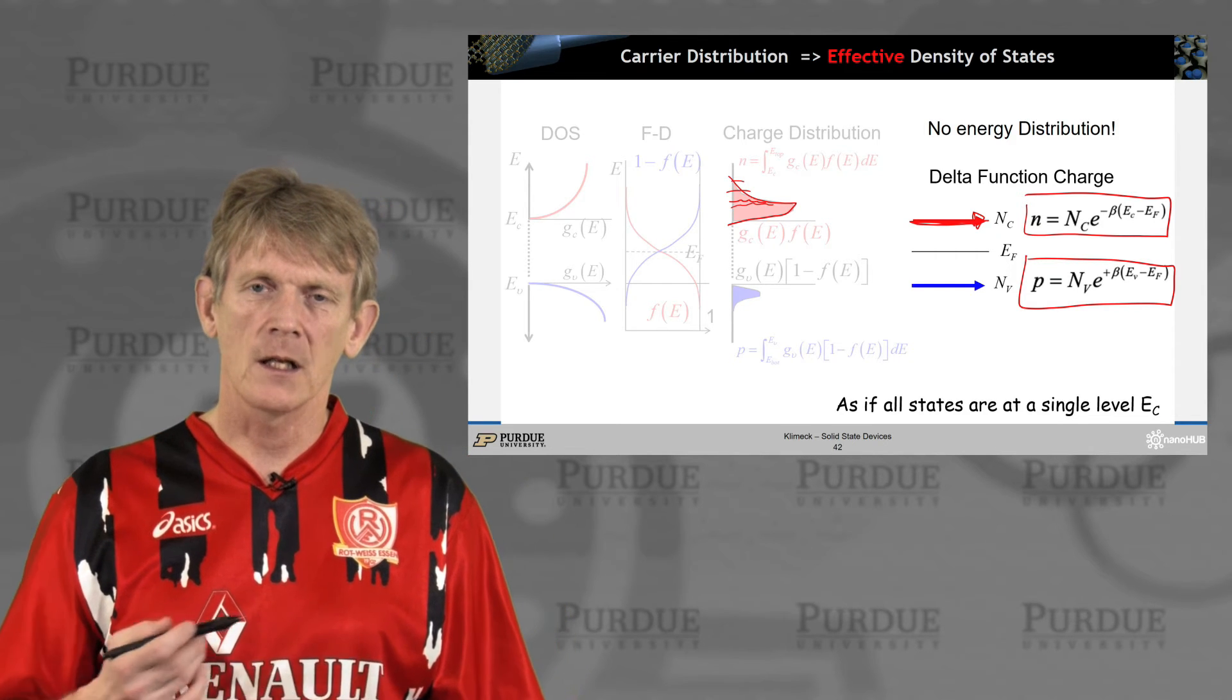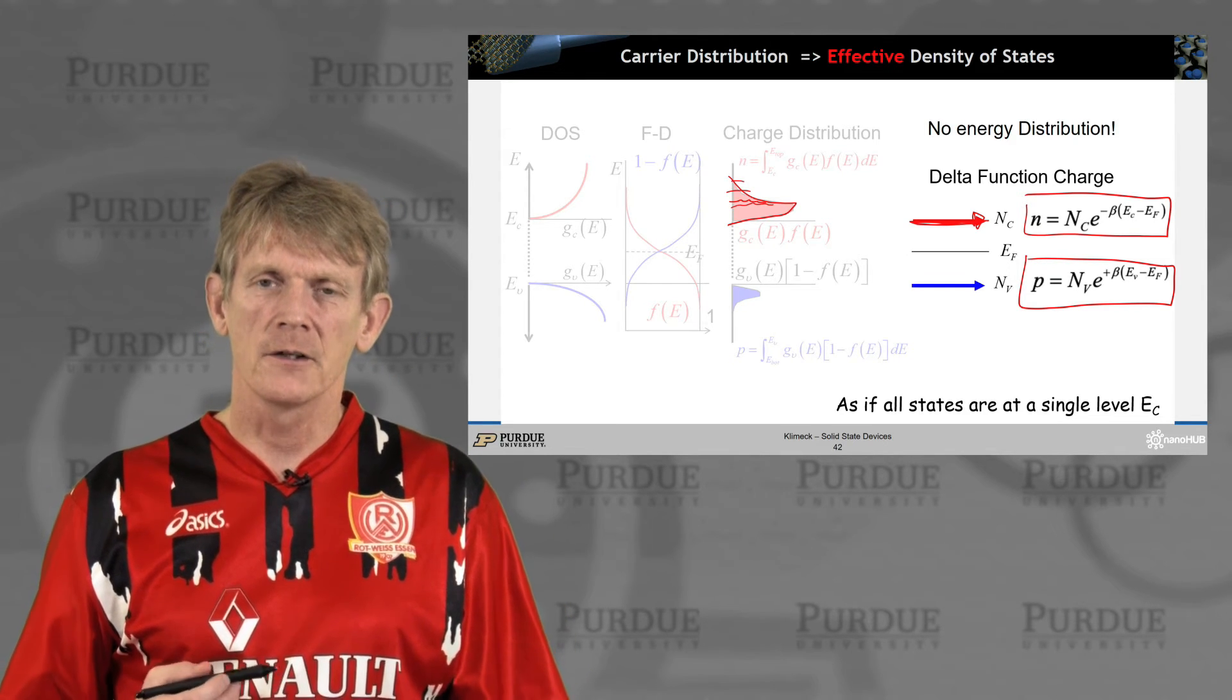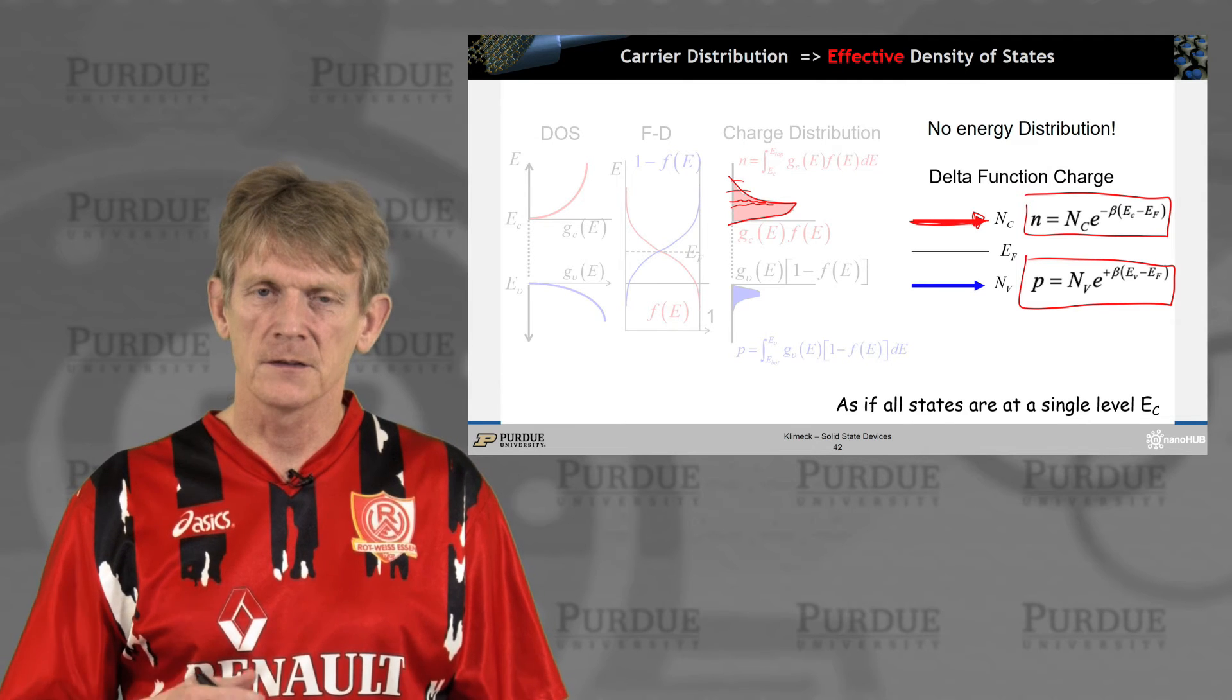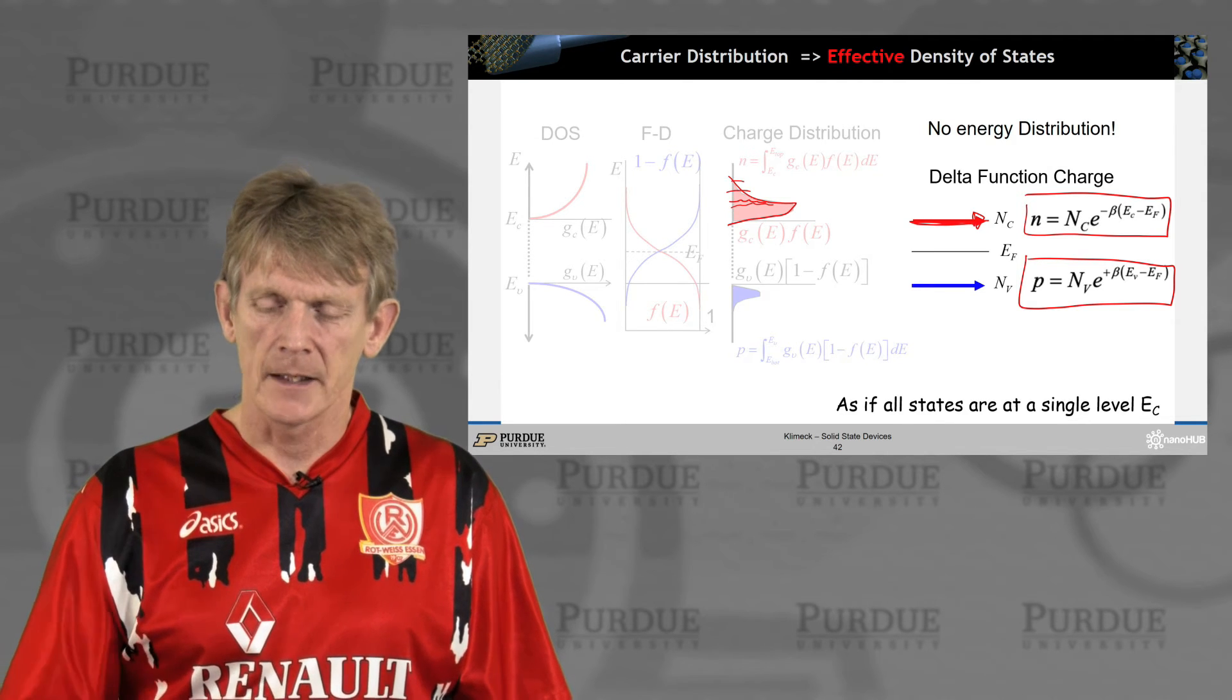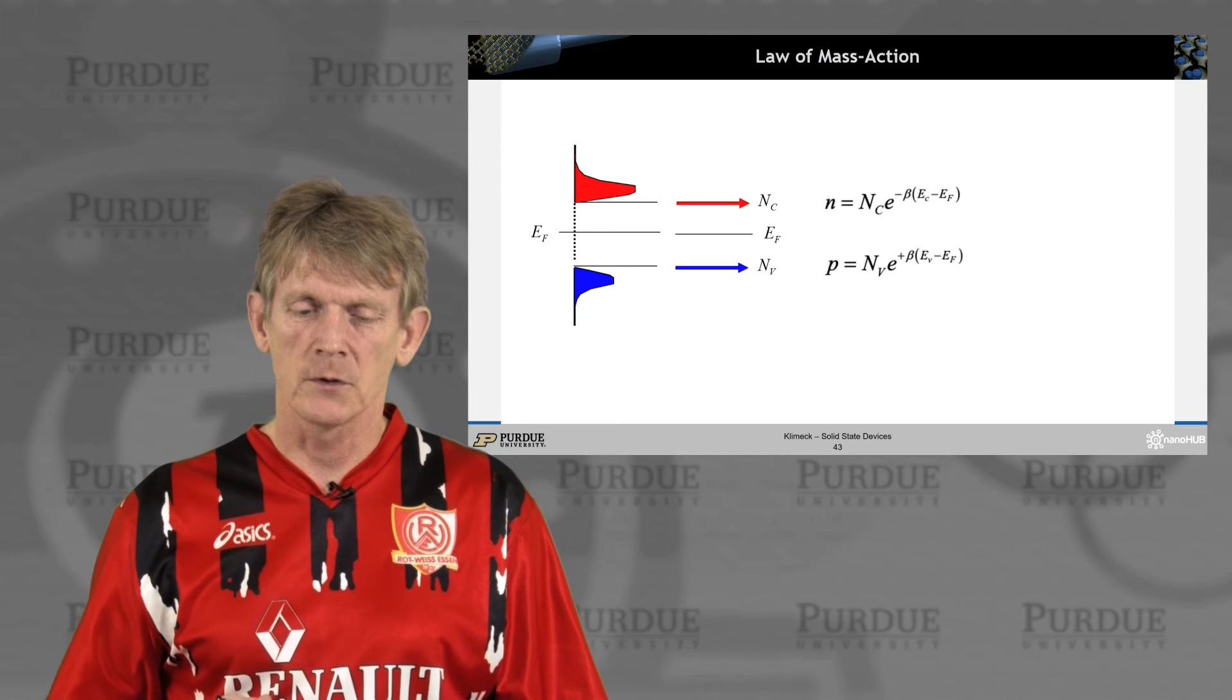So there is no more energy distribution. You collapse it into a single delta function. That means, conceptually, you collapse all the states into a single level that is exactly at the conduction band edge. And that turns out to be rather handy, and you kind of start to forget about all of this complicated density of states. And you can carry, in a semi-classical way, you can carry out calculations of electron densities throughout the structure, and that will be part of the next segment that we'll talk about.